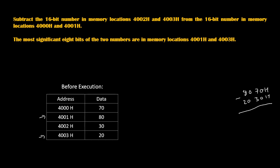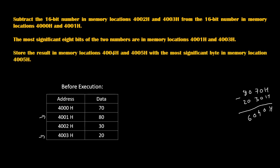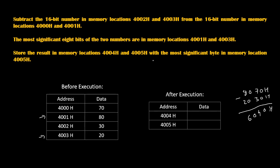Let's do the subtraction directly. 0 minus 0 is 0, 7 minus 3 is 4, 0 minus 0 is 0, 8 minus 2 is 6. So we are expecting our answer as 6040H. The last part of the program says to store the result in memory locations 4004H and 4005H, with the most significant byte in 4005H. So we expect 60H at 4005H and 40H at 4004H.